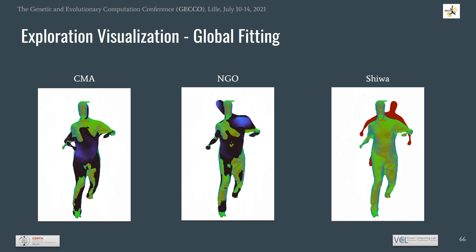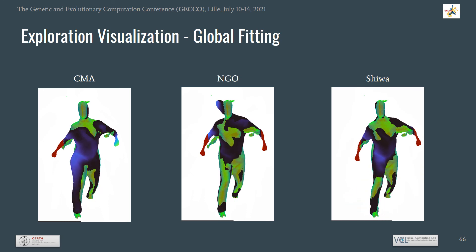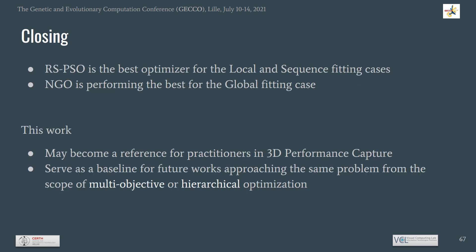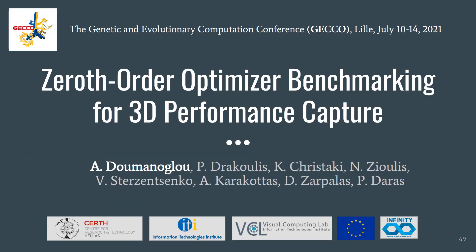For sequence fitting, Real Space PSO and Discrete 1+1 are ranked first and second, similarly to the local fitting case for the same budget, while NGO, SHIWA, and CMA perform on par. We also showcase a visualization of the exploration strategy of the top three optimizers in global fitting, highlighting the hierarchical nature of the exploration. Conclusively, Real Space PSO shows the best performance for local and sequence fitting cases, while NGO performs best in global fitting. Our work may serve as a reference for practitioners in 3D performance capture and as a baseline for future works approaching the problem from the scope of multi-objective or hierarchical optimization.